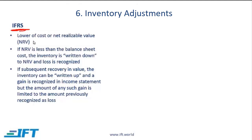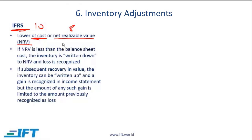IFRS says that on your balance sheet, the inventory number must be the lower of cost or net realizable value. Net realizable value is the value at which you can sell minus any selling costs. If your cost was $10 and the net realizable value is $8, you need to write down to $8. The difference of $2 is shown as a loss on the income statement.